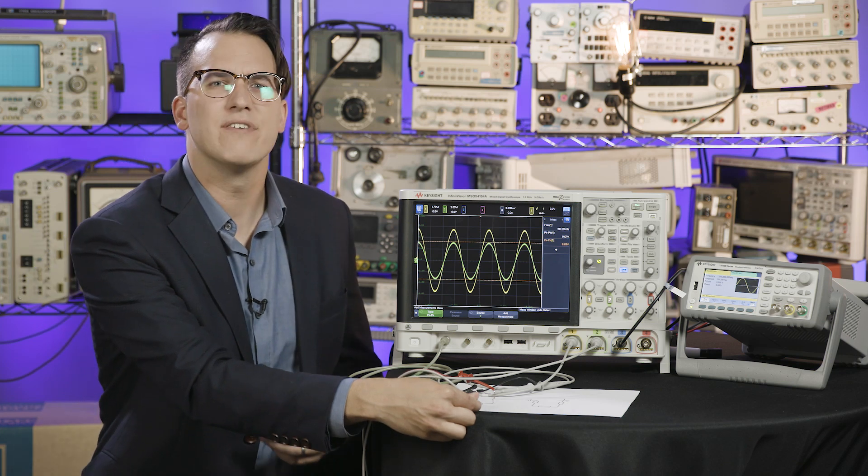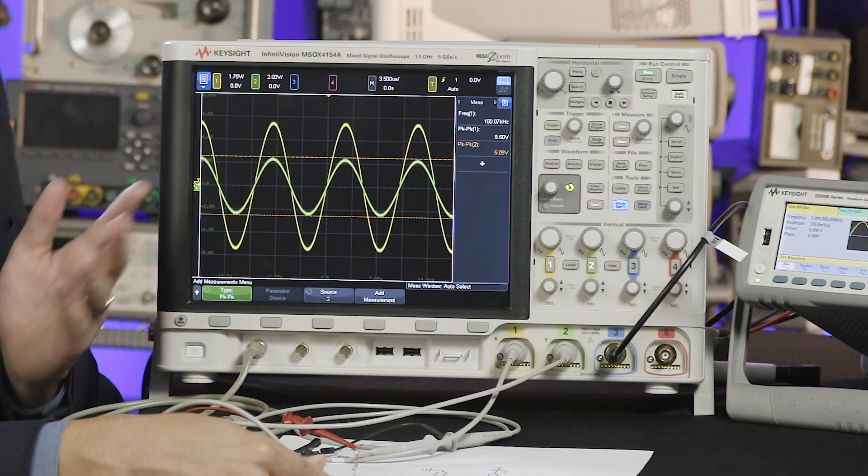So we can try to add the ground clip, effectively identifying our two voltage reference points. And something weird happens. We get 5 volts.